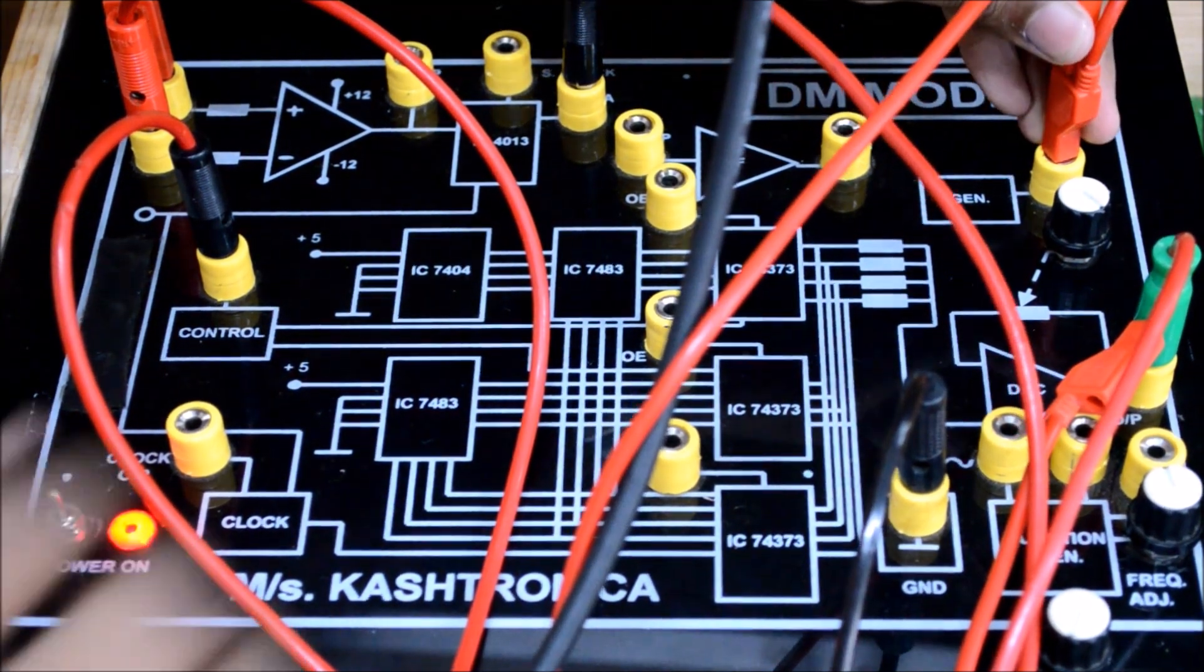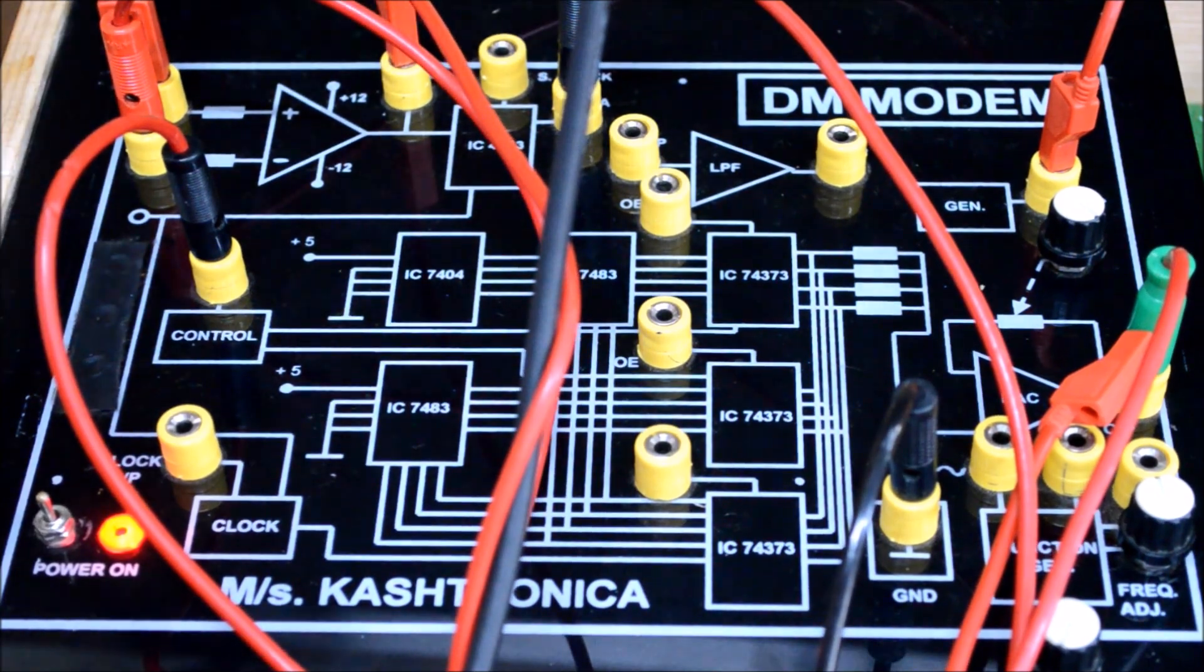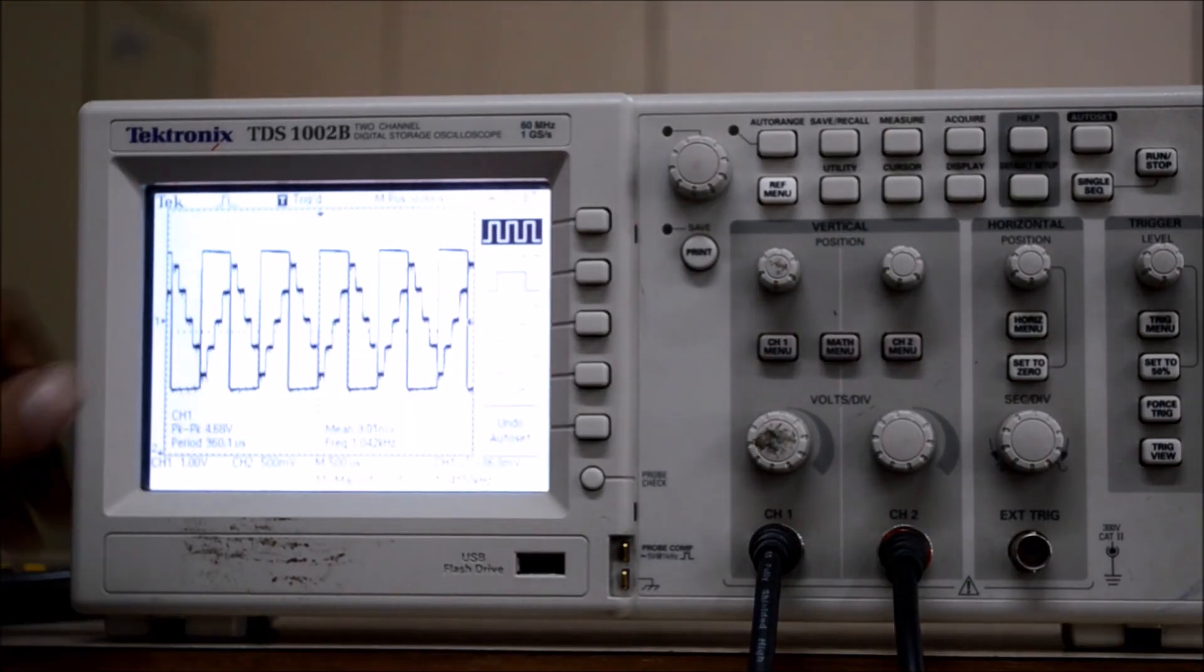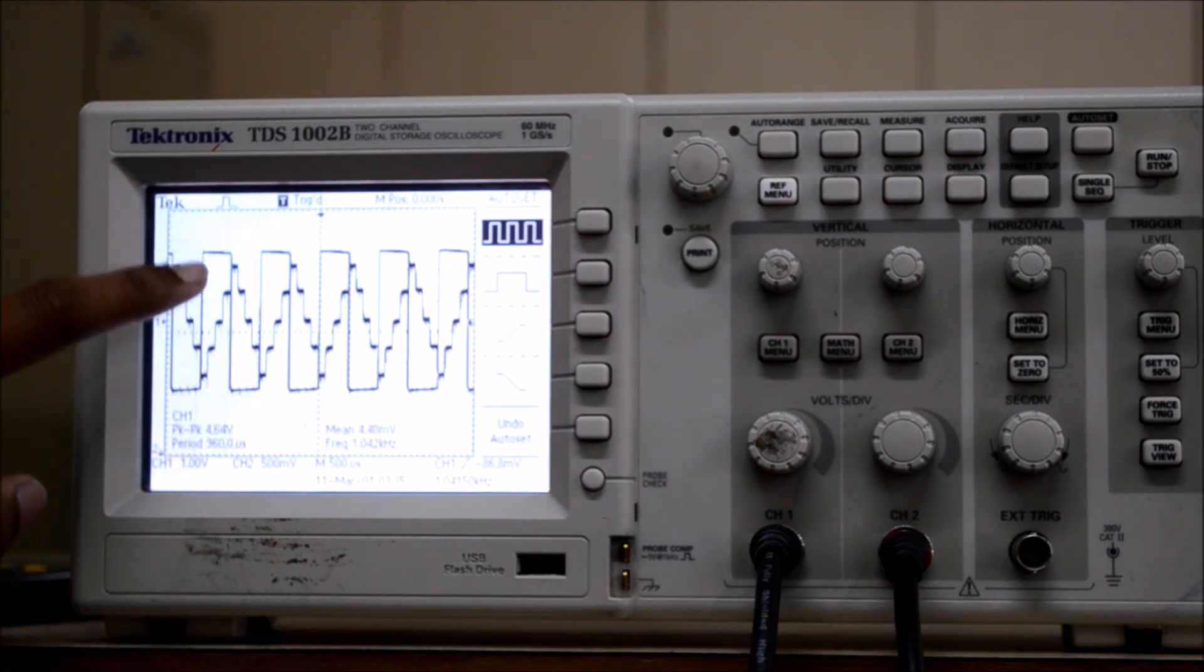Now observe the DM output along with the DAC output. Now here, as we can see, for a 1 transmitted, the DAC output is increasing in 4 steps, and for a 0, it decreases for the same 4 steps.